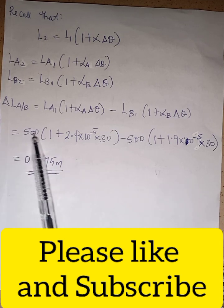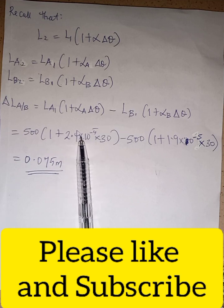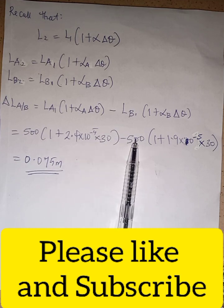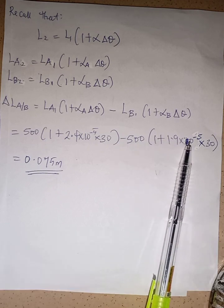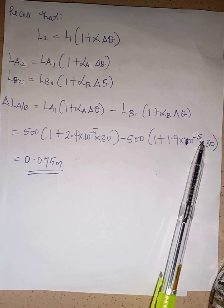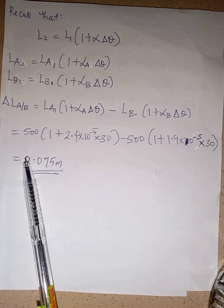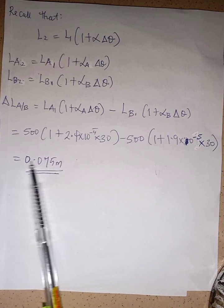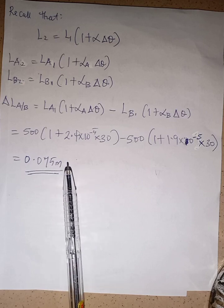On the calculator: 500 × (1 + 2.4×10⁻⁵ × 30) minus 500 × (1 + 1.9×10⁻⁵ × 30). This gives us 0.075 meters. That is the difference between their lengths at 30 degrees Celsius.